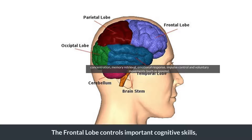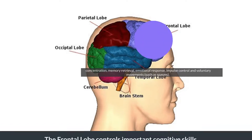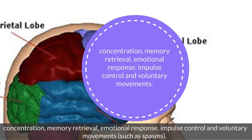The frontal lobe controls important cognitive skills: concentration, memory retrieval, emotional responses, impulse control, and voluntary movements such as spasms.